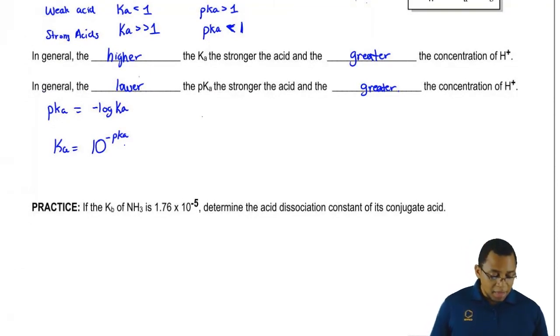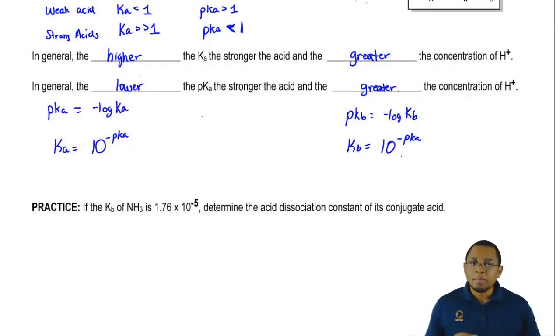We could also say the same thing for pKb. pKb equals negative log of Kb and therefore Kb equals 10 to the negative pKb. Just remember these relationships and how they affect the acidity of our compound. As long as you can remember these few quick calculations, you'll be able to go from one to the other.